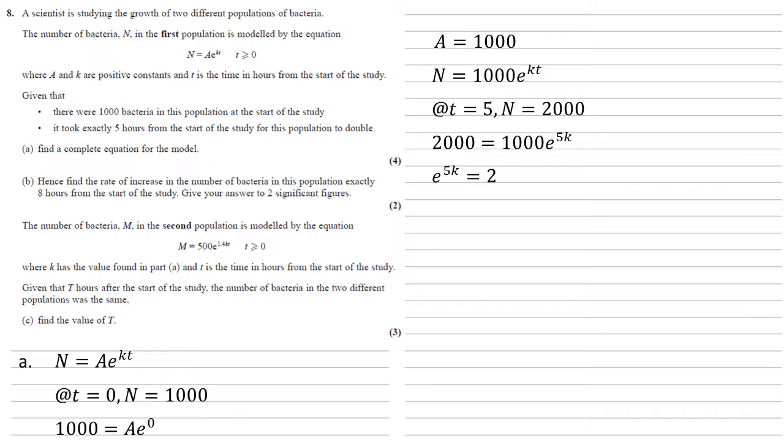Putting these in, we get that 2000 equals 1000 e to the 5k. Dividing through, get e to the 5k equals 2. Now we could have jumped straight to this if you're feeling confident, because it's the e to the kt that is multiplying the a, so for the population to double that e part must be equal to 2.